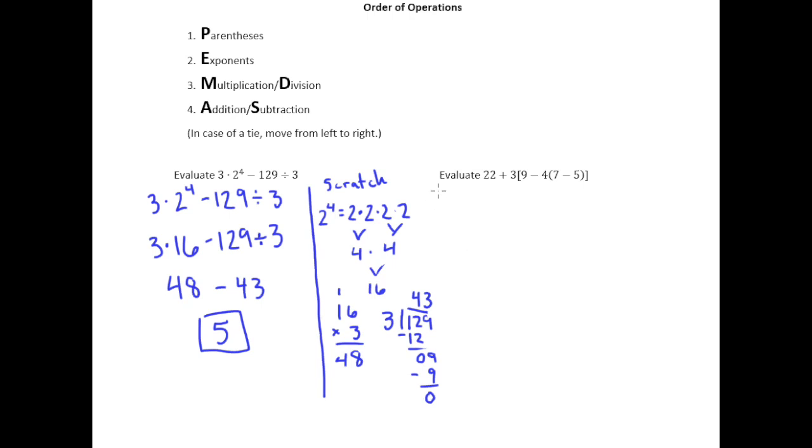So now taking a look at this example on the right, we've got a lot going on here and a lot in terms of grouping symbols. Notice we've got brackets here. Brackets are a type of grouping symbol, and then parentheses. These brackets here say okay do everything inside of me first before doing anything on the outside. So we know we're supposed to look at 9 minus 4 times 7 minus 5 in parentheses. That's the stuff we should be looking at first.